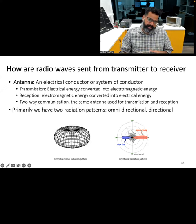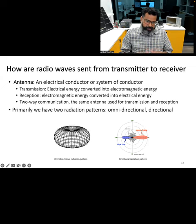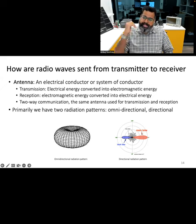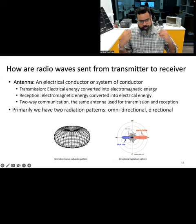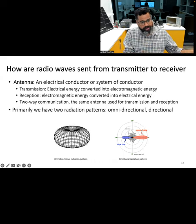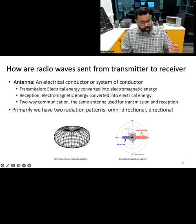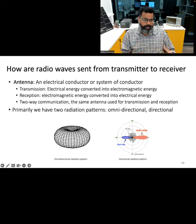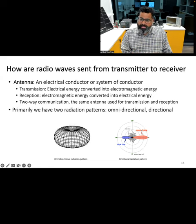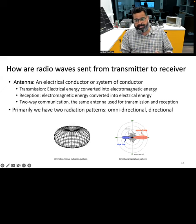Once we have modulated the electromagnetic signal with information, how do we radiate it and convert it into electromagnetic energy? Once the carrier signal is modulated, it is transmitted through a device called an antenna. We have all seen antennas in our day-to-day life — for example, your Wi-Fi router has an antenna built in. Smartphones, which have multiple radios, also usually have multiple antennas built in and optimized for different frequencies.